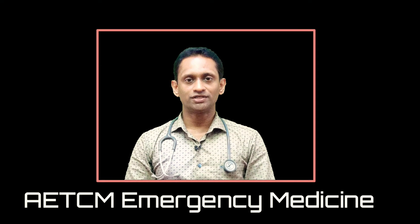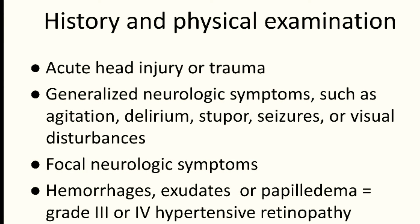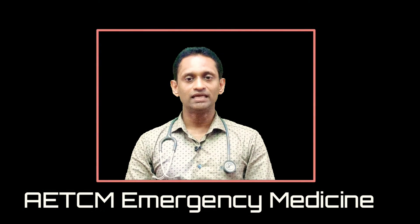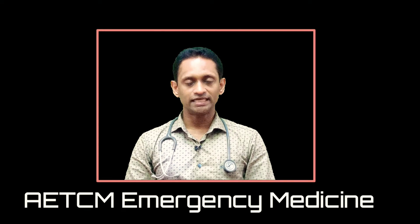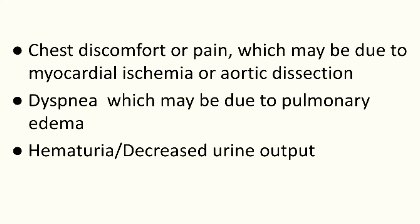We look for evidence of target organ damage. Neurologically, this includes acute head injury or trauma. In hypertensive encephalopathy, patients can have acute generalized neurological symptoms such as agitation, delirium, stupor, seizures, or visual disturbances. In hemorrhagic or ischemic stroke, patients may have focal neurological symptoms like unilateral weakness. Grade 3 or grade 4 hypertensive retinopathy on fundus examination — hemorrhage and exudates in grade 3, and papilledema in grade 4.